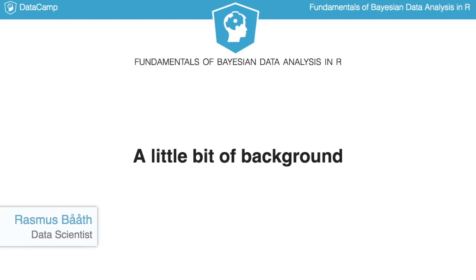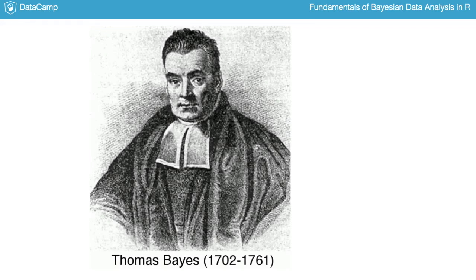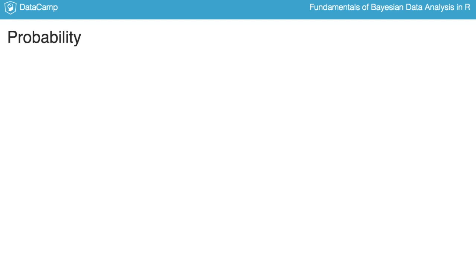At the end of this video, we are going to do some actual Bayesian data analysis, but first we need a little bit of background. Bayesian data analysis is named after Thomas Bayes, who in the middle of the 18th century wrote the first article describing what we today would call Bayesian inference. A better term would be probabilistic inference, because that's what you do when you do Bayesian data analysis — it's really just about using the full power of probability theory to draw conclusions and learn from your data.